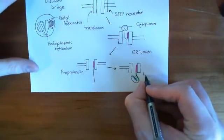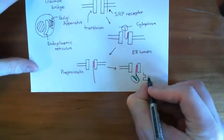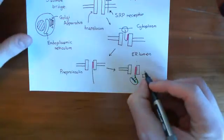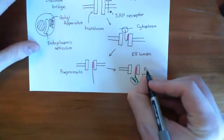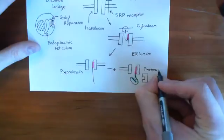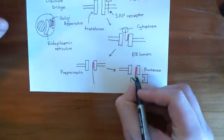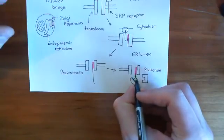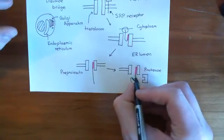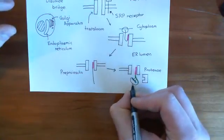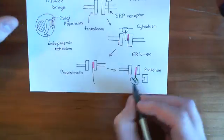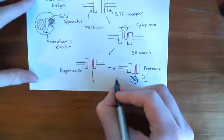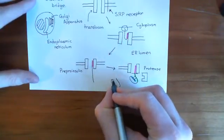An enzyme — a protease — is going to come along and cut the signal sequence off. It's going to cut the polypeptide between the signal sequence and the B chain, breaking a peptide bond and cutting off the B chain with the C peptide and the A chain from the signal sequence. What you get is a molecule now in the ER lumen with disulfide bonds, the B chain, and the A chain.